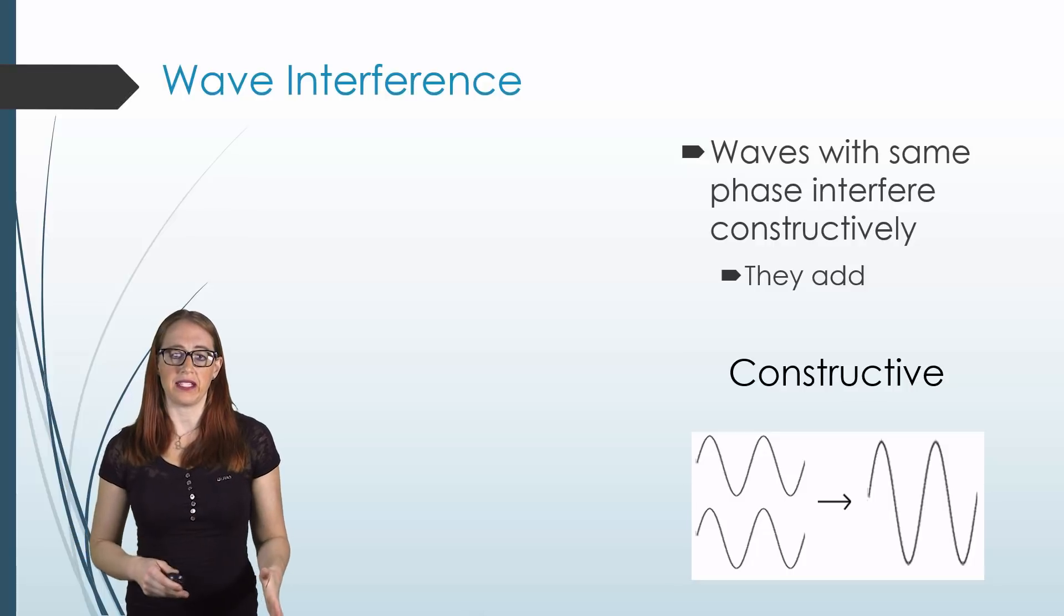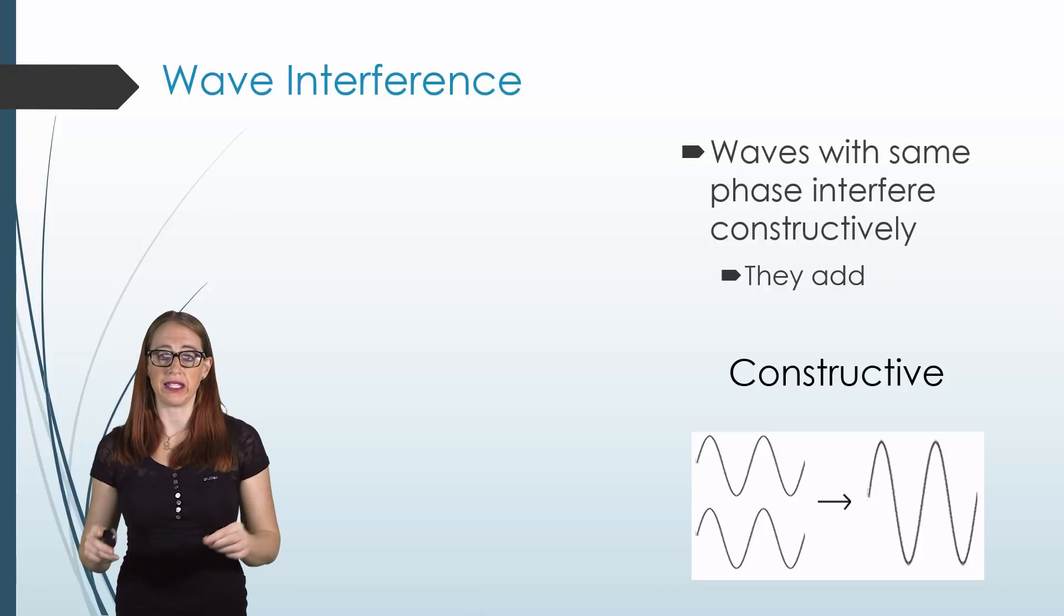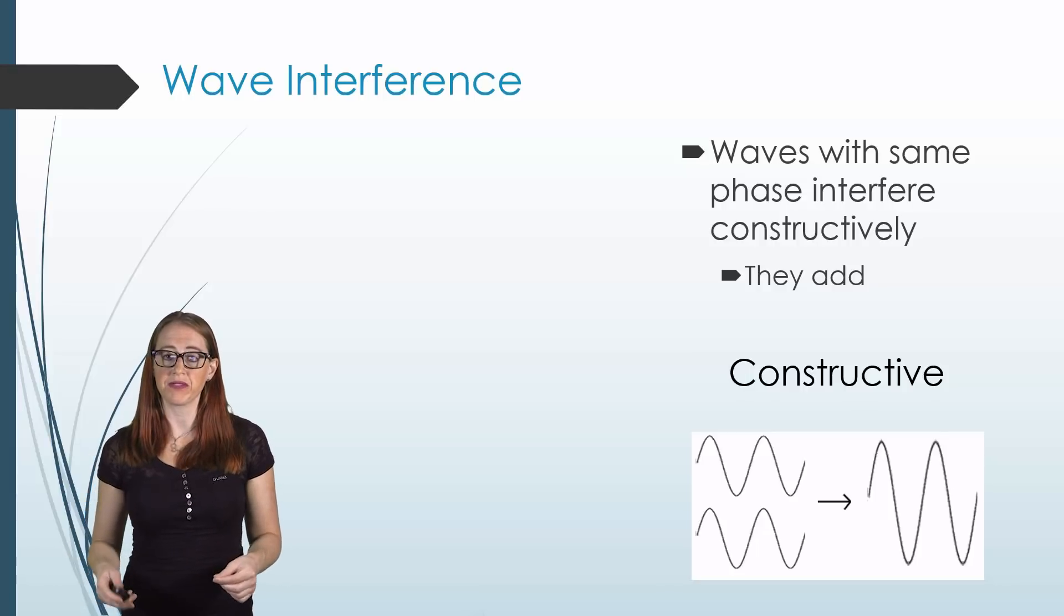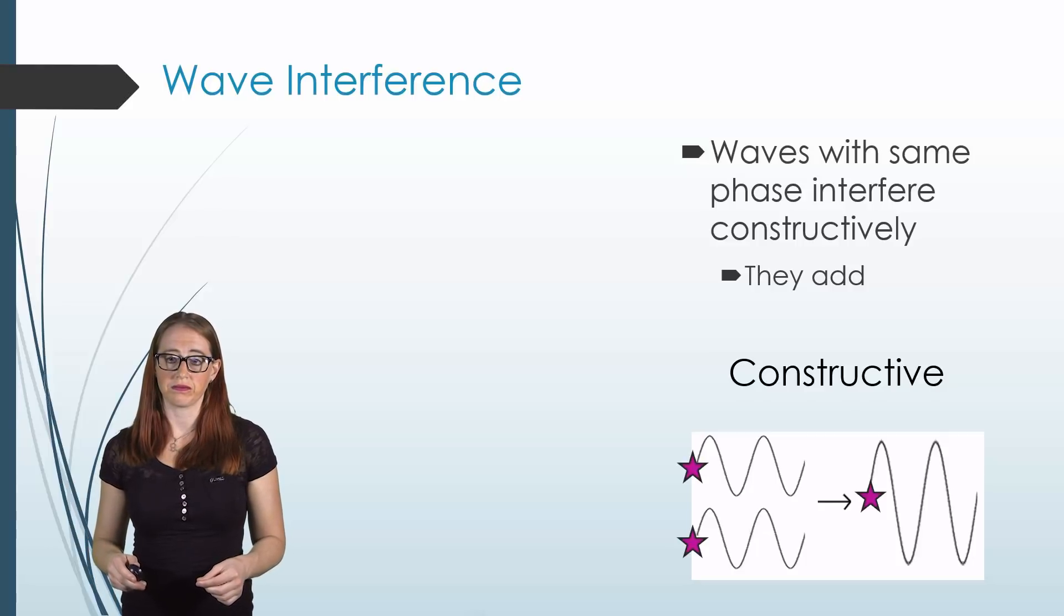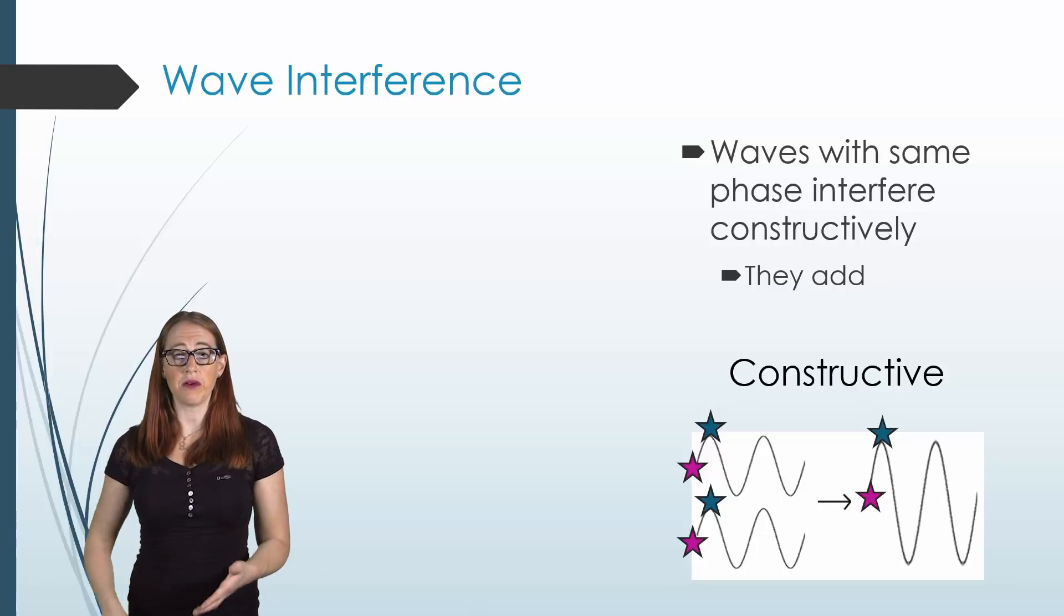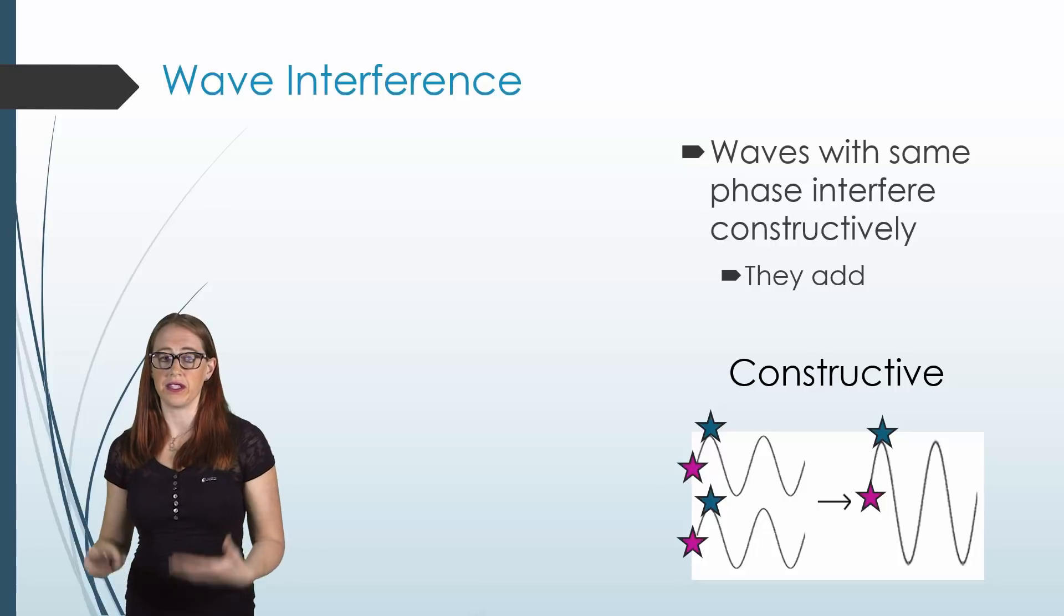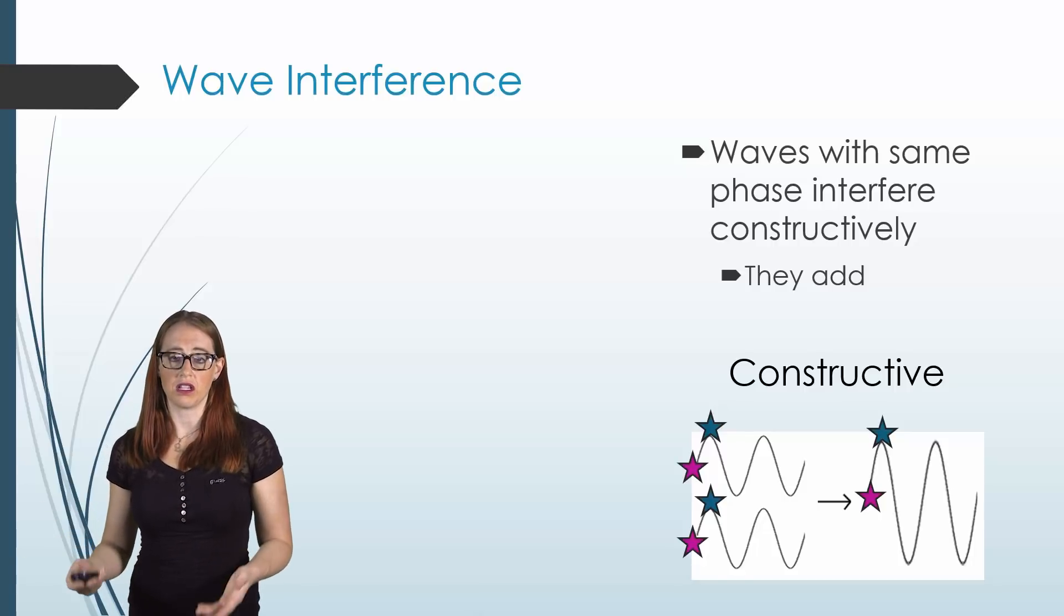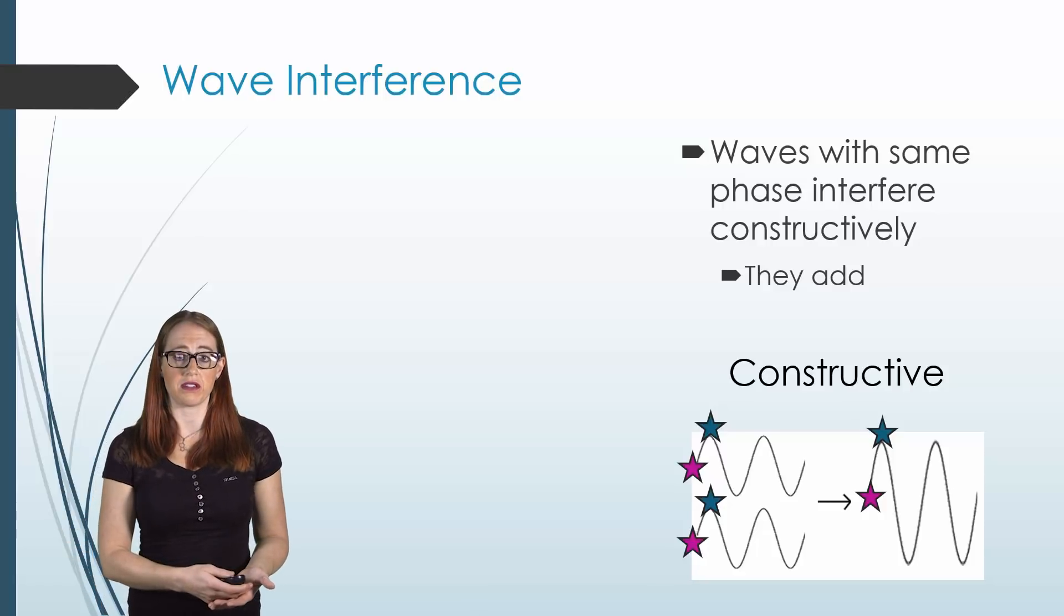Think back to your early math days when you had to add two waves together. You may remember having to go point by point and add them to show what the new wave looked like. If we start here and then move to the second part, to the second wave, and we add those together, we are still at zero. But now let's move to the blue stars. If you add those up, now it's going to go up double the distance. And we could arbitrarily call each one of those one, and then it would add to be two. That's called constructive interference. This gives us a wave that is larger than the two waves that we started with.